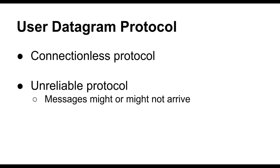The User Datagram Protocol, on the other hand, is a connectionless and unreliable protocol in which messages might or might not arrive. You might wonder what the advantage of using UDP is over simply using a network packet directly. The answer is simplicity for implementation code — UDP provides the ability for multiple different applications to share the same network layer and have messages destined for different applications sent to the appropriate application, without each application having to filter every incoming message.